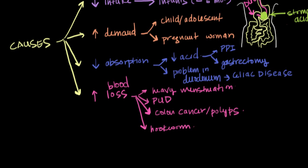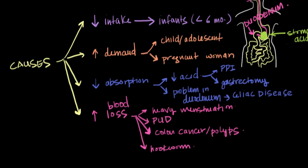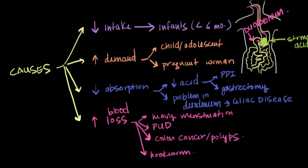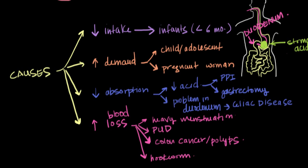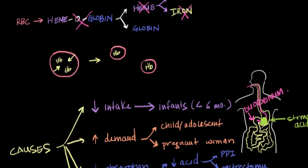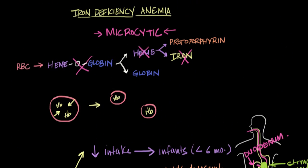These are the most commonly encountered causes of iron deficiency anemia. Keep in mind that iron deficiency leads to a problem with making hemoglobin, which ultimately leads to a microcytic anemia.